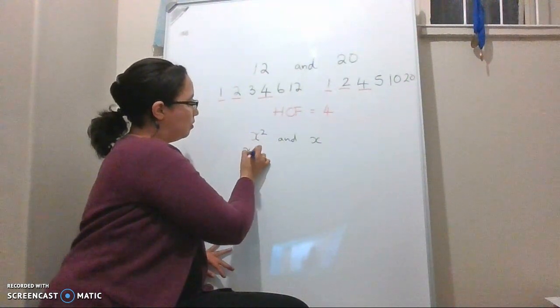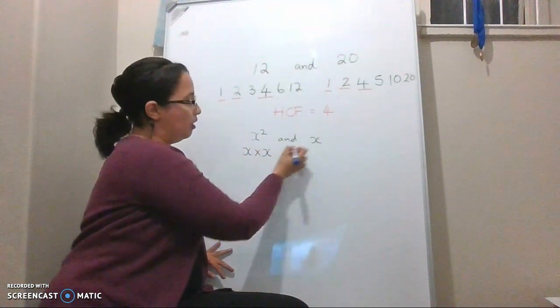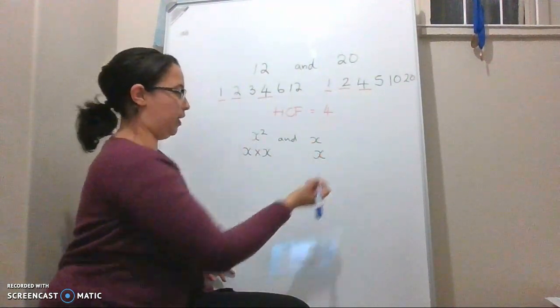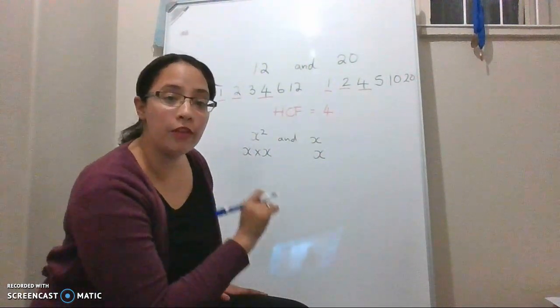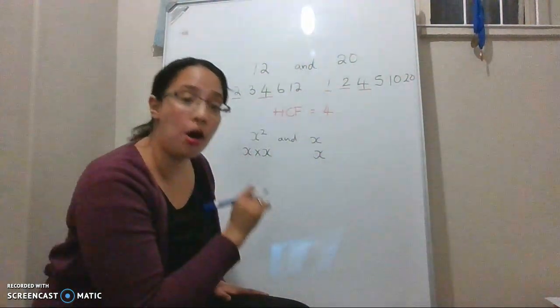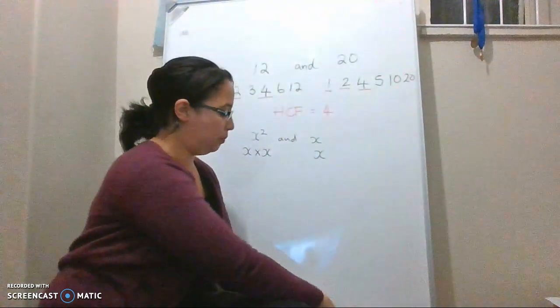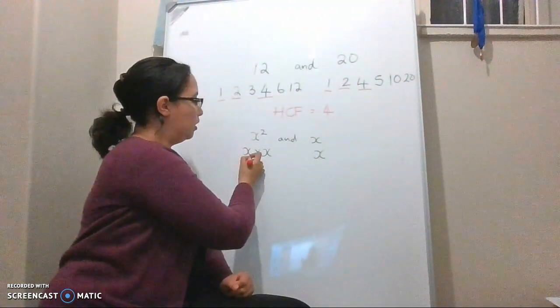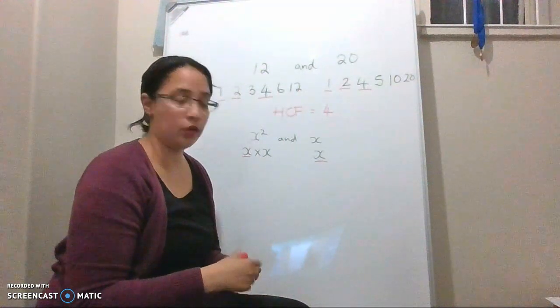I'll get x multiplied by x. That's just one factor of x. So how many factors of x will be common between these two? Only one.